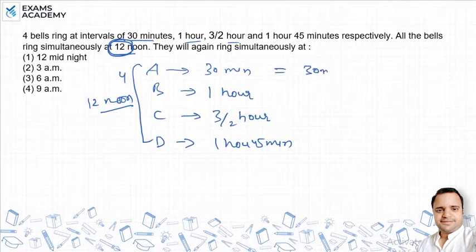In 12 noon, A is 30 minutes, B is 1 hour which is 60 minutes. Same fashion, C is 3/2 hours which is 90 minutes, and D is 1 hour 45 minutes which is 105 minutes.